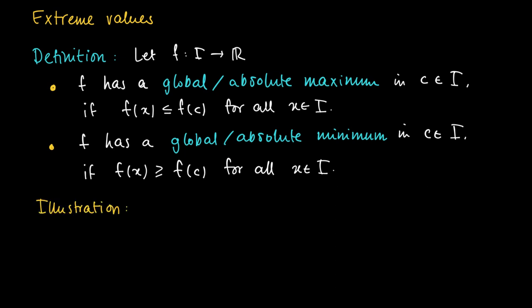Here's a picture to illustrate the definition. Here we have in blue the graph of some function f, and in red we have an interval I. We clearly see that the lowest part on the graph is the yellow dot over here. This is a global minimum.